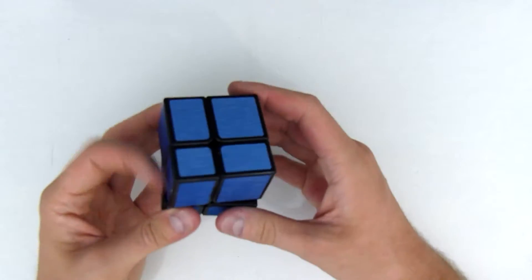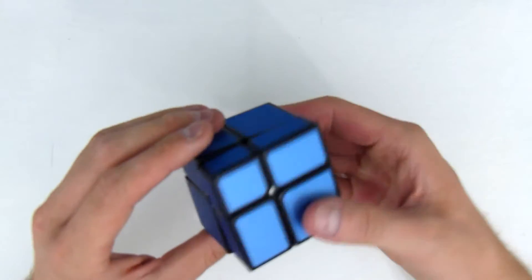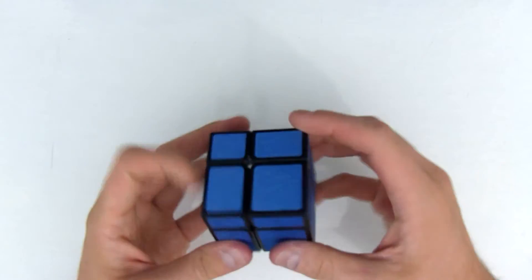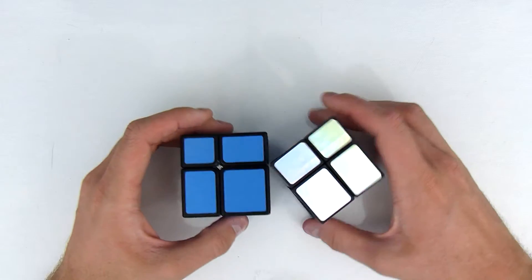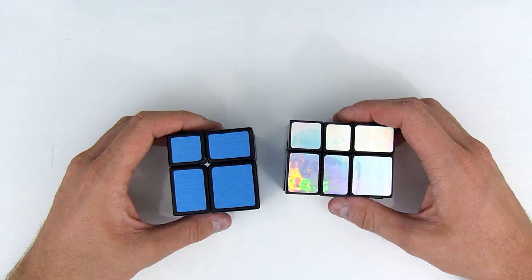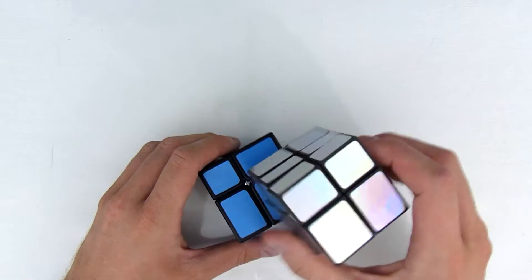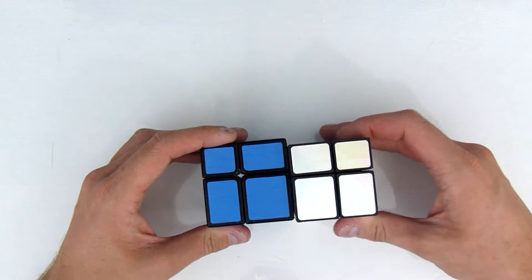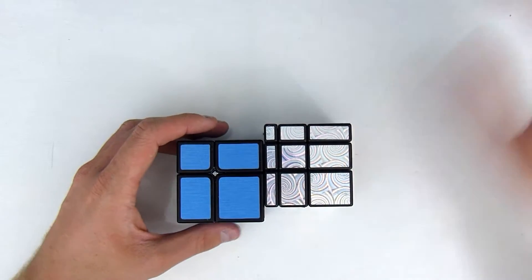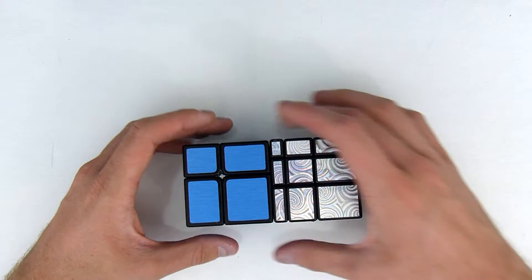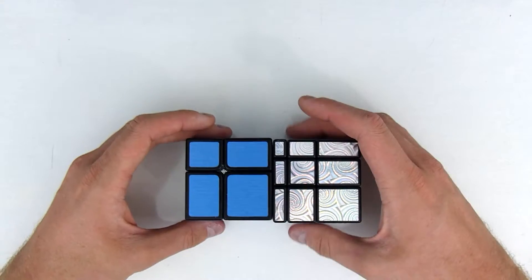It spins really well straight out of the box. This puzzle is really nice. Just to give you a size comparison, this is my mirror two by two by three. It's not the same layer size though. Yeah that's quite interesting, there's regular sized mirror blocks, so you can see it's about the same size which is nice.